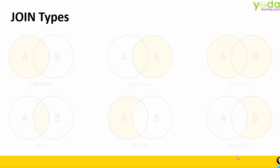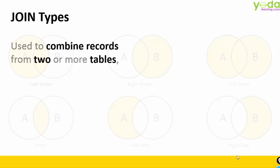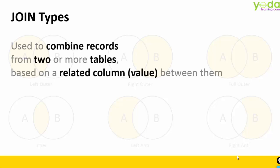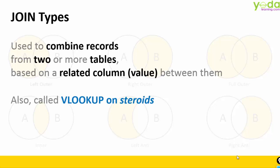Join Types. Hello and welcome everyone. In this short video, we will learn about Join Types. Let me share a quick definition. It is used to combine records from two or more tables based on a related column between them. A lot of people even call this VLOOKUP on steroids, and I will explain to you in subsequent minutes why.